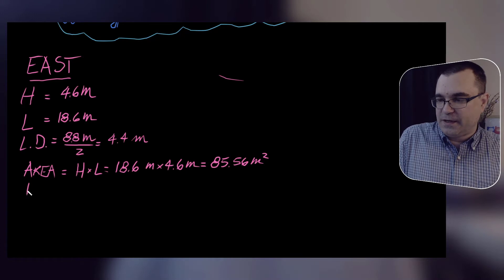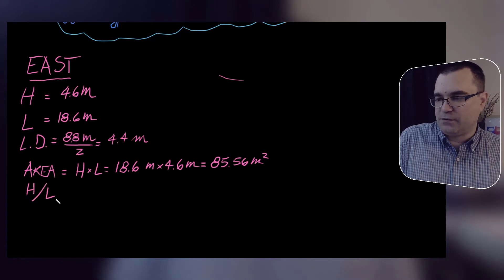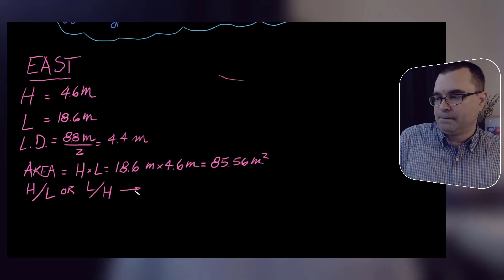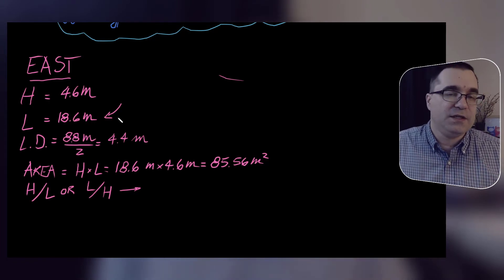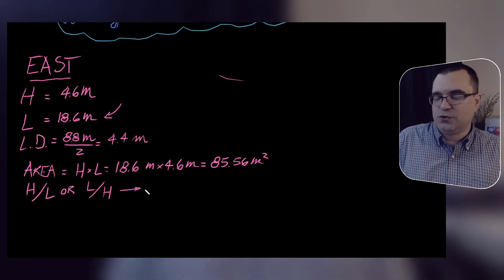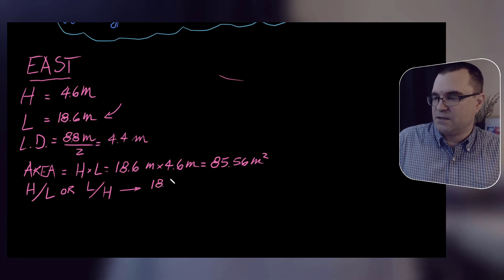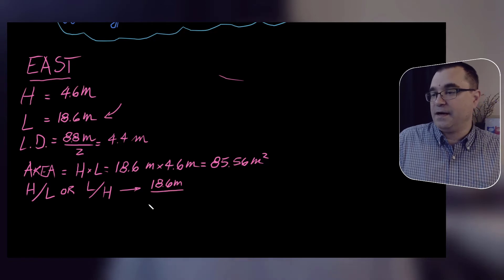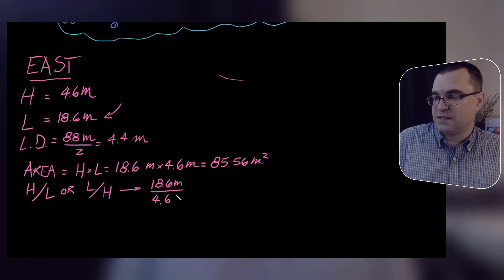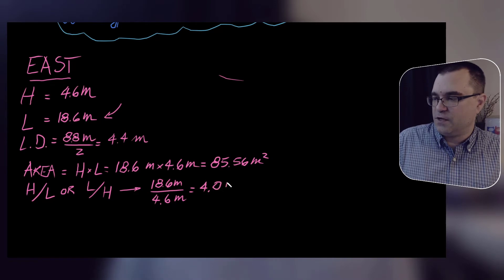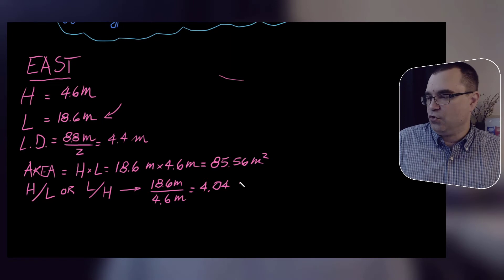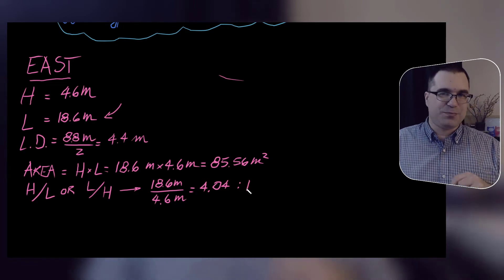We also have to figure out H over L and L over H and take the larger one. Since L is the larger of the two values, L over H is going to be larger than H over L. So I'm going to do L over H: 18.6 divided by 4.6, which gives us 4.04 — the same as writing 4.04 to 1 — so that we compare it against the proper row in the table.